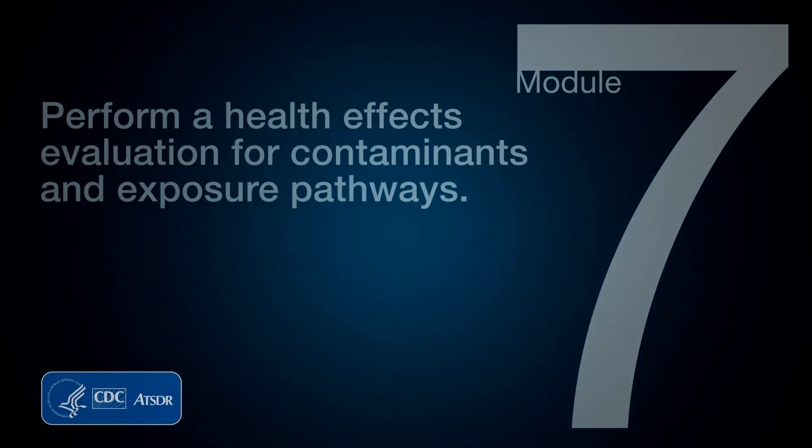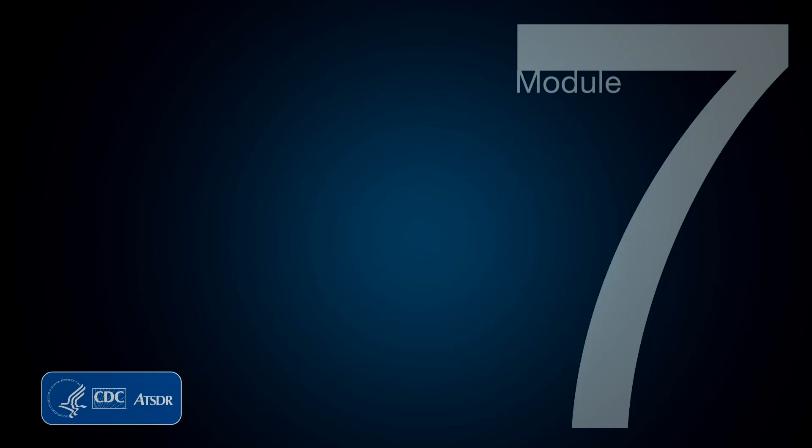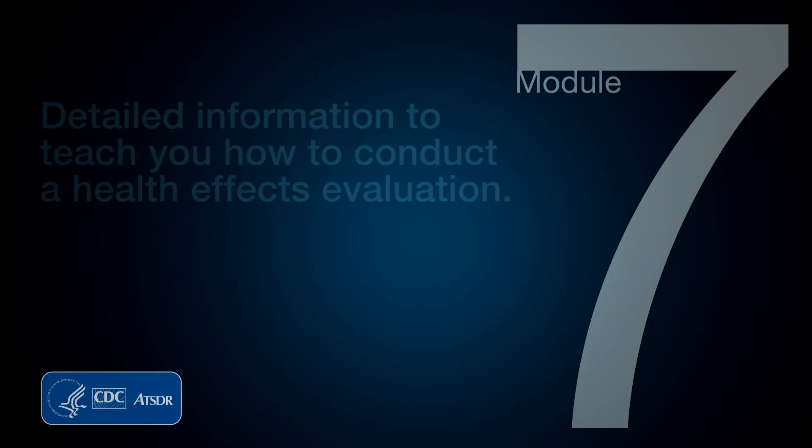Module 7 will teach you how to perform a health effects evaluation for those contaminants and exposure pathways identified as contaminants of concern during the screening process. Throughout the health effects evaluation, you might ask yourself questions like: What process do I follow to determine if exposures to site-related contaminants could be harmful? What tools and guidelines do I use to perform the health effects evaluation? And what factors do I need to consider to further evaluate the contaminants found at levels that could potentially cause health effects?